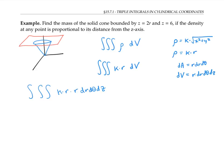From the previous page, we know that z is ranging between 2r and six, r is ranging between zero and three, and theta is ranging between zero and 2π.